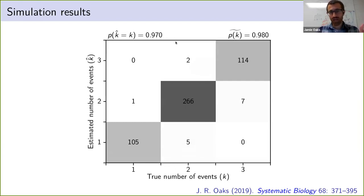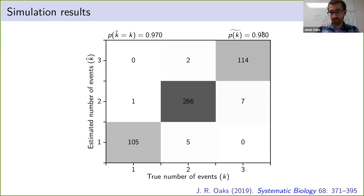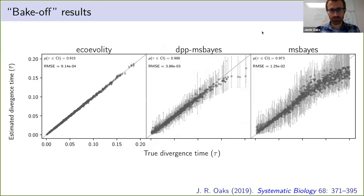In terms of estimating how divergence pairs are grouped together, it's also doing quite well. This is the true number of events with three possible pairs — if we estimate well, all simulation replicates should fall along the diagonal, and most of them are: 97% of the time they are, and we have high posterior confidence in that correct answer.